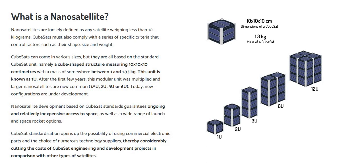Nano-satellites are loosely defined as any satellite weighing less than 10 kilograms. CubeSats must also comply with a series of specific criteria that control factors such as their shape, size, and weight. CubeSats can come in various sizes, but they are all based on standard CubeSat units — namely a cube-shaped structure measuring 10 x 10 x 10 cm with a mass of somewhere between 1 and 1.33 kg. This unit is known as 1U.